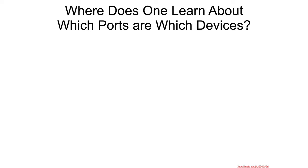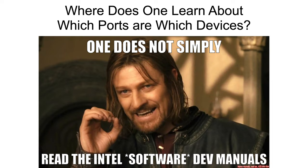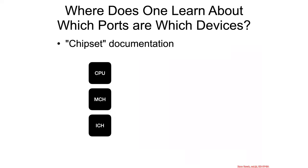The next question is how you learn which ports correspond to which hardware devices. One does not simply read the Intel software development manuals for that — instead you have to consult what's called the chipset documentation. We cover this in much more detail in Architecture 4001; this is just a brief overview.